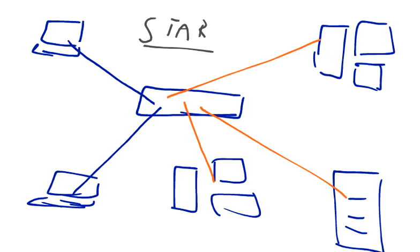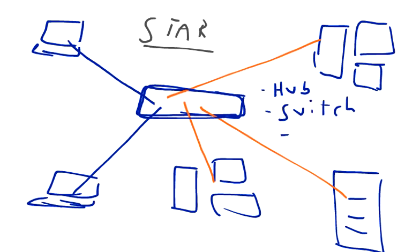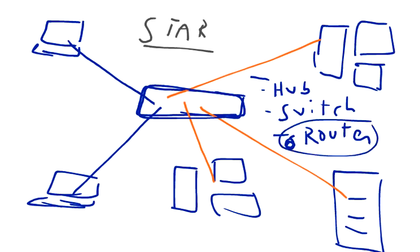That central communication device can be a hub, which is a dumb device, a switch, or a router and so on. The hub is a dumb device, while a switch or router is an intelligent device.